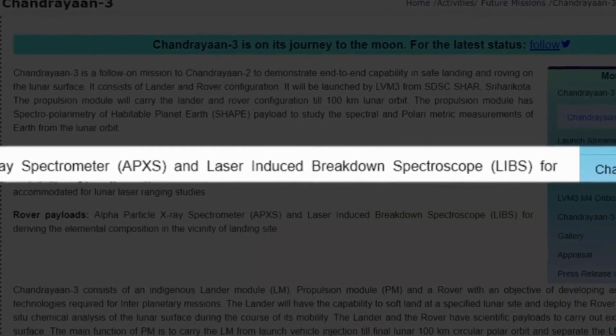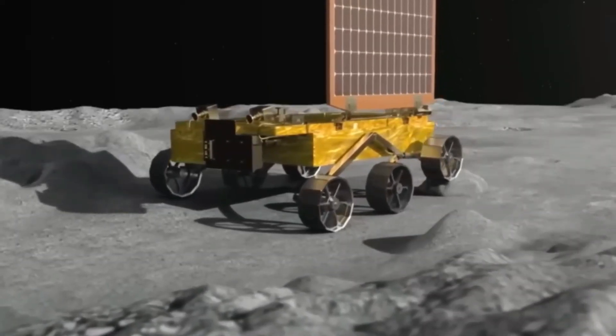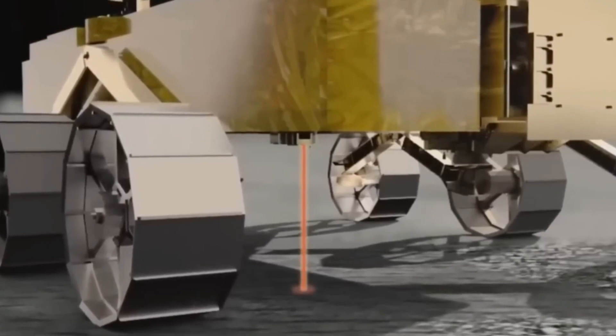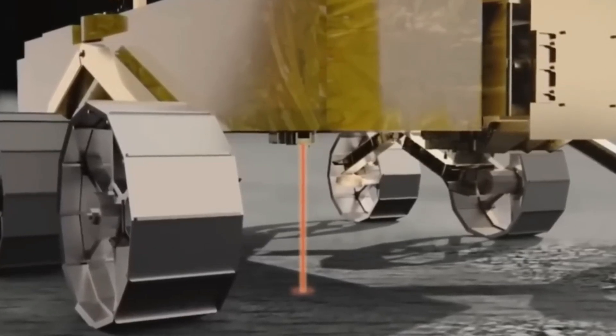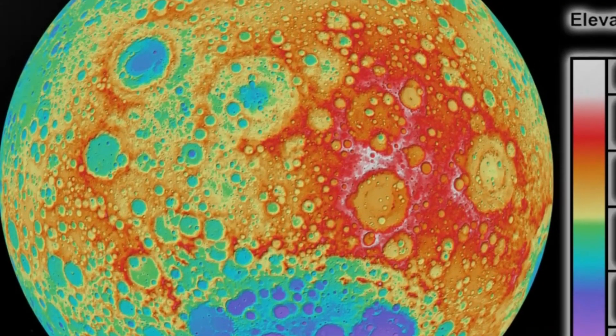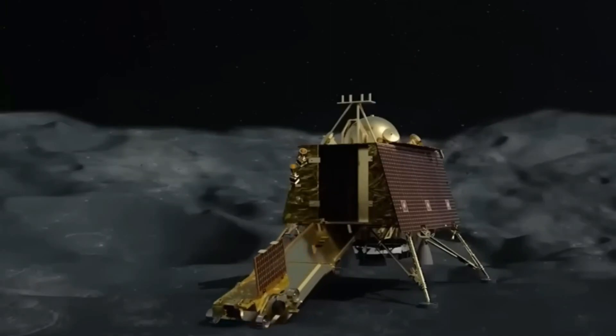LIBS. This payload determines the elemental abundance on the lunar surface using laser-induced breakdown spectroscopy. It can detect elements such as hydrogen, carbon, nitrogen, oxygen, sodium, potassium, lithium, and fluorine. LIBS has detected traces of water molecules in some of the samples collected by the rover, confirming the presence of water ice near the south pole.